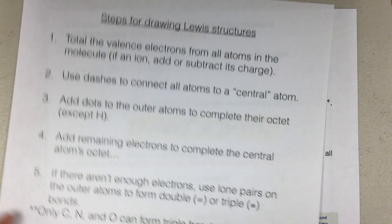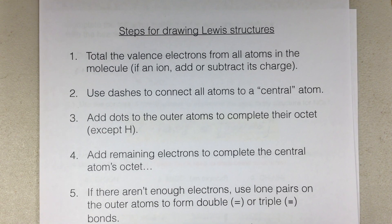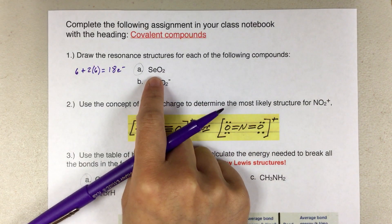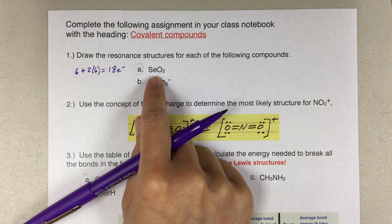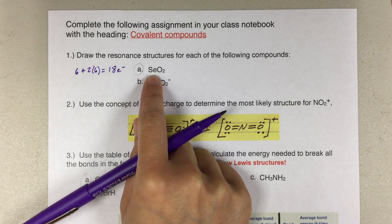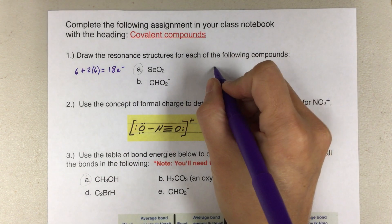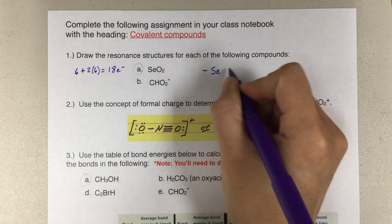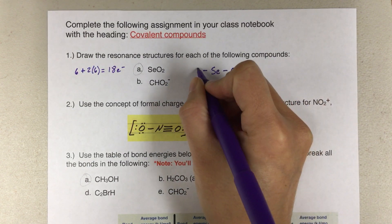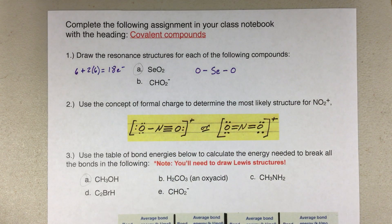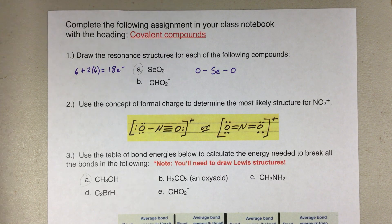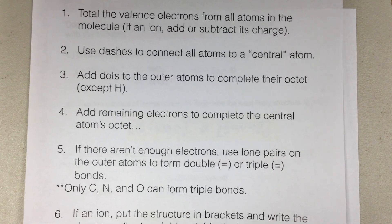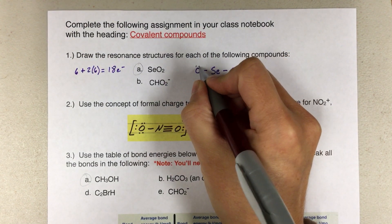The second step — and this is a good review of Lewis structures — is to use dashes to connect all atoms to a central atom. In this one, it's pretty easy to see what our central atom is because selenium is all by itself, so we're going to put that in the middle. The oxygens will go on the outside. I'm going to switch to pencil because I'm not sure how the rest of this will play out. I need to add dots to the outer atoms to complete their octet, so I'll do that for these oxygens.